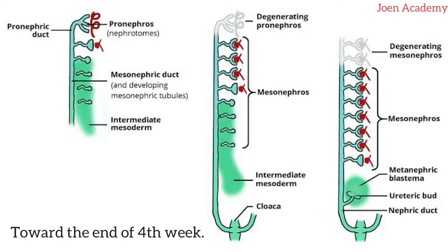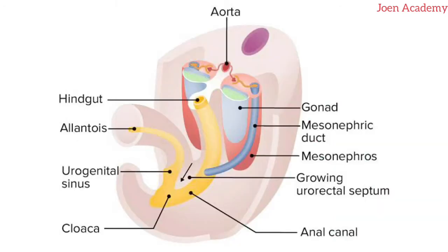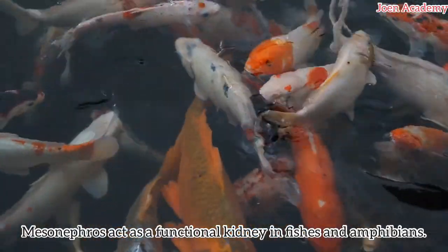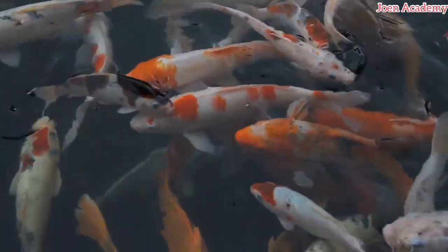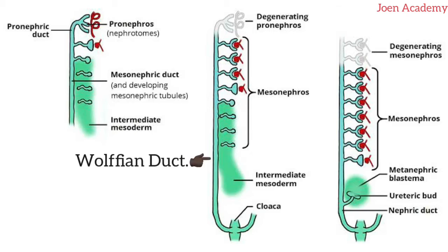Towards the end of the fourth week, the mesonephros develop caudally to the pronephros in the thoracolumbar region. In fishes and amphibians, the mesonephros act as a functional kidney. The mesonephros consists of a series of excretory tubules and these tubules drain urine into the nephric duct, which is now known as the mesonephric duct, which can also be called the Wolffian duct. Through this duct, urine passes to the cloaca.